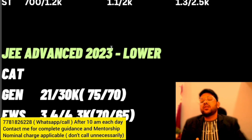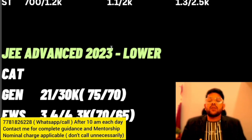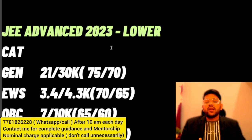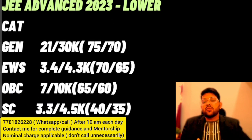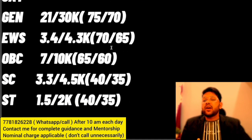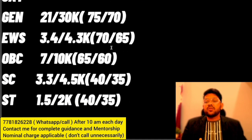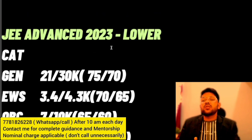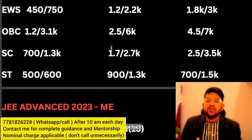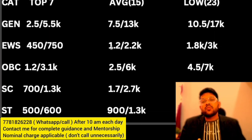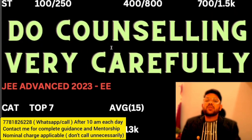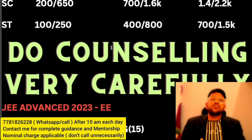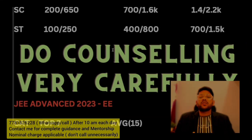If you just want the IIT tag with any branch, for General your rank should be around 20000–21000 (male/female). EWS: 3400–4300, OBC: 7000–10000, SC: 3300–4500, ST: 1500–2000. These are the safe ranks for entering any IIT. I hope you find this information useful. Please subscribe to the channel, and if you need complete counseling guidance, you can contact me through Instagram or WhatsApp — there is a nominal charge for that. Thank you.